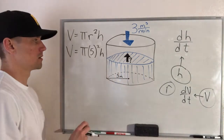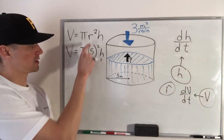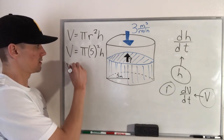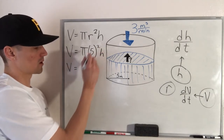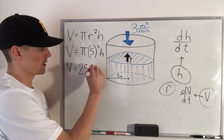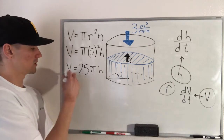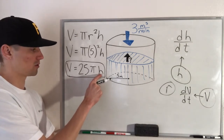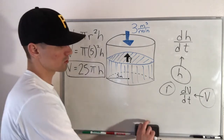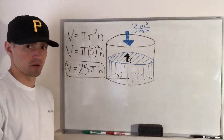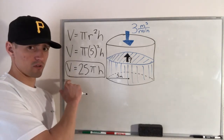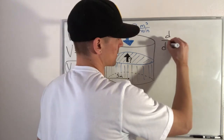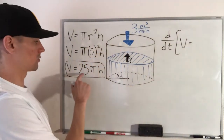I want to stress that the only reason we can do this is because the radius is not changing. If the radius were changing as water was pumped in, we would not be able to do this and would need to differentiate with respect to time. But since the radius is constant, it's okay to plug it in now. So replacing r with 5, we get V = π(5²)h, which simplifies to V = 25πh. This is the equation we'll carry into the next step.